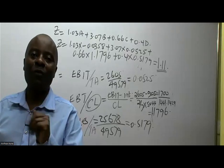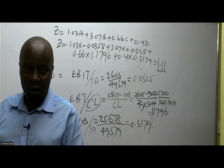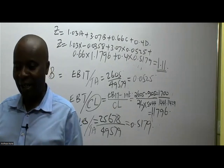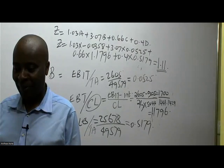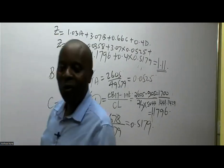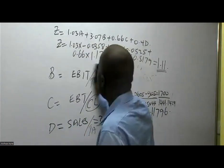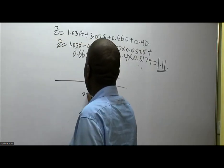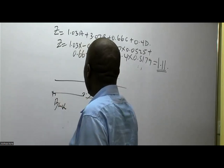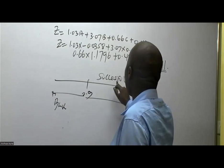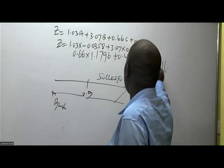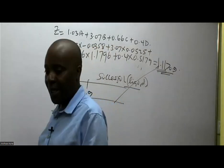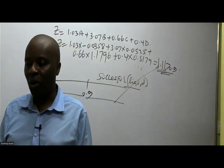From the threshold I gave you on the number line, is Caban a bankrupt organization or a liquid organization? Our threshold is 0.9 — below 0.9 means bankrupt, anything above means successful. Our Z value is 1.111, which is more than 0.9. Therefore, Caban Limited is a liquid organization — it is financially successful.